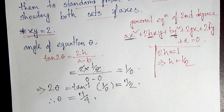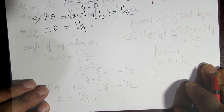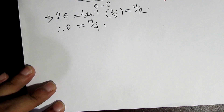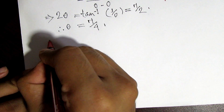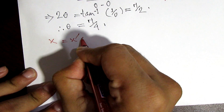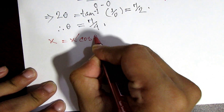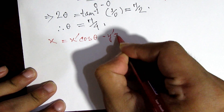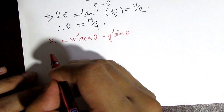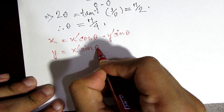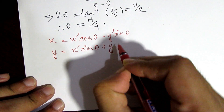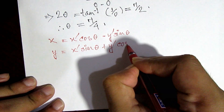So theta equals π/4, and we are going to rotate using the half-angle equations to keep the ratio equal. So y = x' sin(θ) + y' cos(θ).